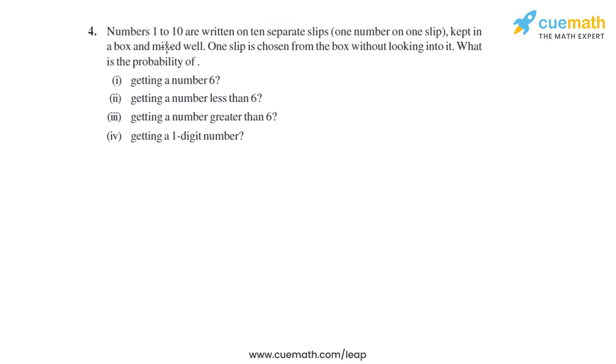Question 4 of this exercise is: Numbers 1 to 10 are written on 10 separate slips, one number on one slip, kept in a box and mixed well. One slip is chosen from the box without looking into it. What is the probability of getting a number 6? Getting a number less than 6? Getting a number greater than 6? And getting a one-digit number?